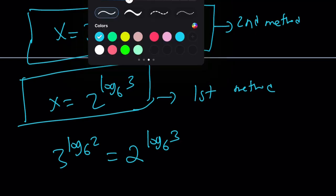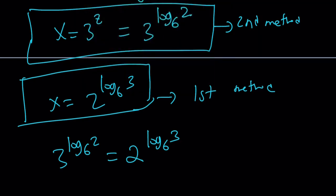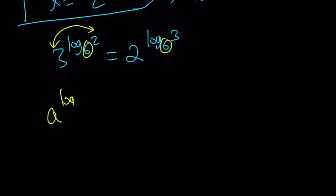Now notice something interesting. This is a special property of logs. If these two bases are the same, these numbers can interchange. In other words, you have something like a to the power log c base b, you can write it as c to the power log a base b. Same base is being used, but the base is in the exponent. It's kind of weird, but that is a very special property of logs.